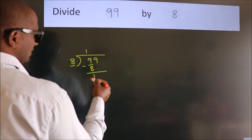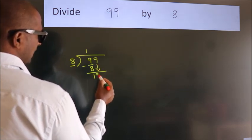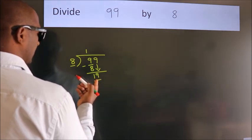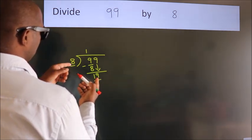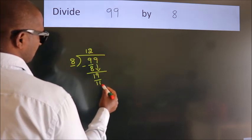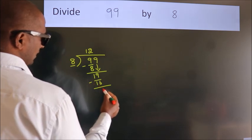After this, bring down the beside number. So, 9 down. So, 19. A number close to 19 in 8 table is 8 twos, 16. Now, we subtract. We get 3.